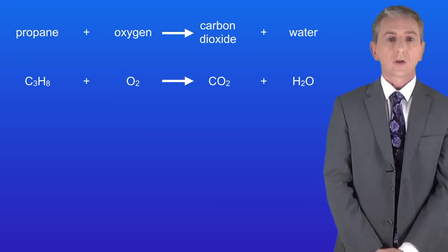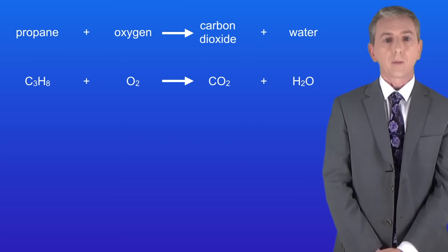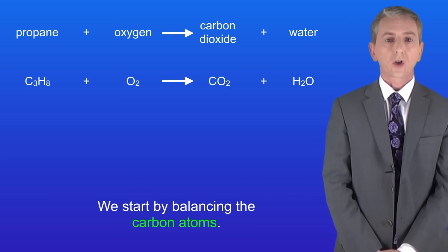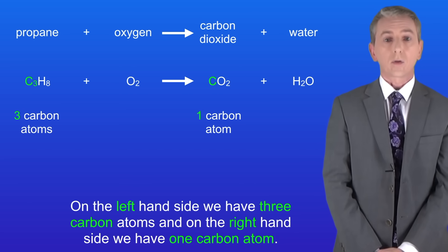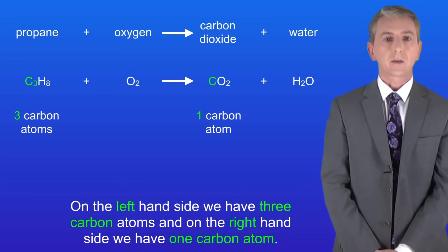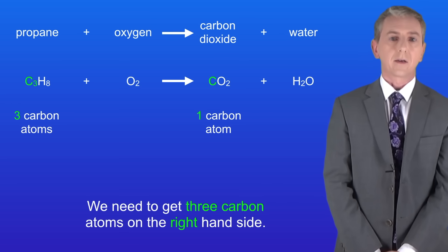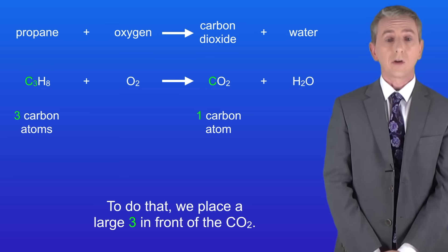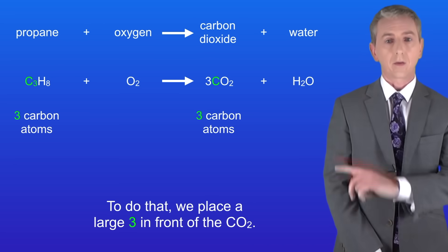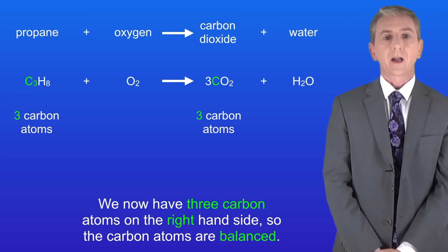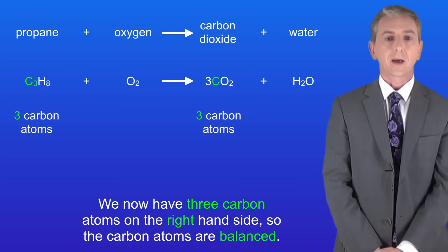Here's a combustion equation for you to try. Pause the video now and balance this equation. Okay, so we start by balancing the carbon atoms. On the left hand side we've got three carbon atoms and on the right hand side we've got one carbon atom. So we need to get three carbon atoms on the right hand side and to do that we place a large three in front of the CO₂. We now have three carbon atoms on the right hand side so the carbon atoms are balanced.